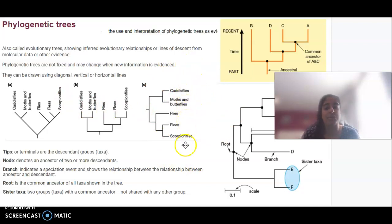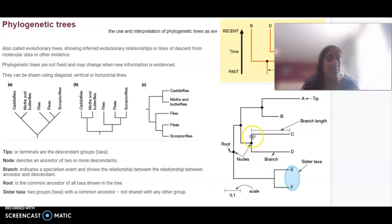The node is where an ancestor of two or more descendants may be. A branch indicates a speciation event occurring and shows the relationship between different species and ancestors. The branch length is also important.